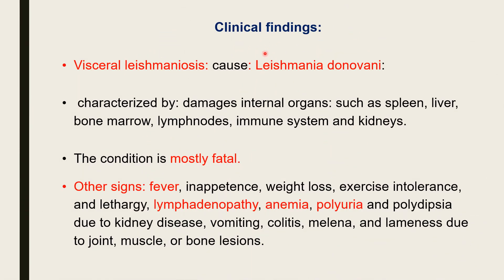There are two types of disease: cutaneous leishmaniosis and visceral leishmaniosis. We will now see the symptoms of visceral leishmaniosis. In this form, many organ systems are involved, and it is called by Leishmania donovani. It is mostly characterized by damage to internal organs. Important organs damaged include the spleen — there is splenomegaly — the liver with hepatomegaly, and changes in the bone marrow and lymph nodes.